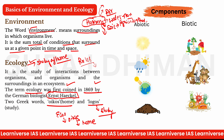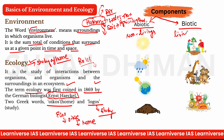अब देखिए, जो components हैं environment के अंदर, वो दो तरह के होते हैं। एक होते हैं abiotic components — ये mostly non-living things होती हैं। और दूसरी side पर biotic components होते हैं, यानि जो living things होती हैं।